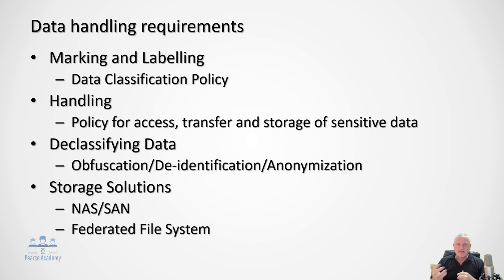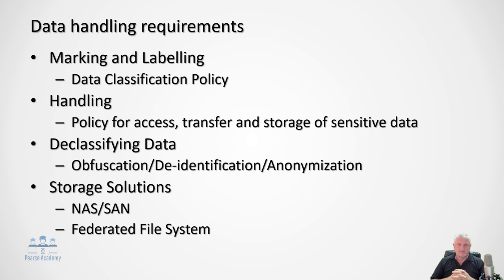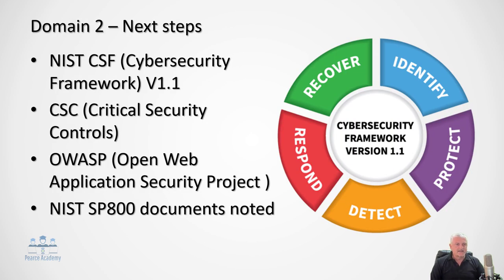Storage solutions include network-attached storage (NAS), SANs, arrays, and federated file systems. In summary, this is a small but critical domain. Recommended next steps include reviewing the NIST Cybersecurity Framework step-by-step, the critical security controls, the OWASP (Open Web Application Security Project), and the referenced NIST SP 800 documents. Having assets properly defined is essential before performing business impact analysis, business resumption planning, compensating controls, and disaster recovery — if you fail in assets, it creates a domino effect across many other domains.